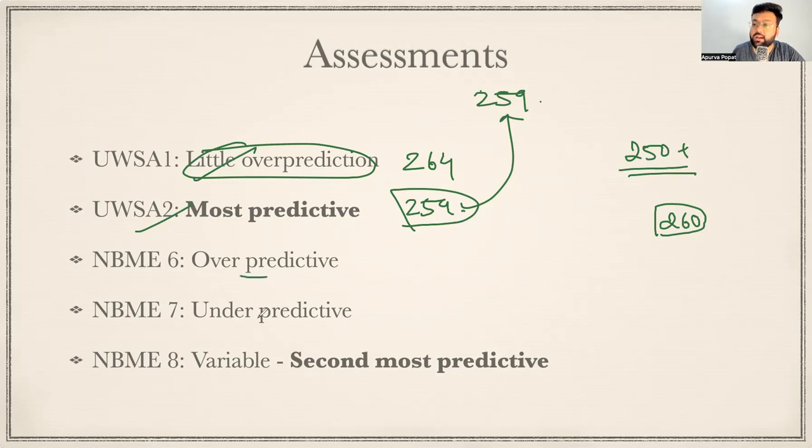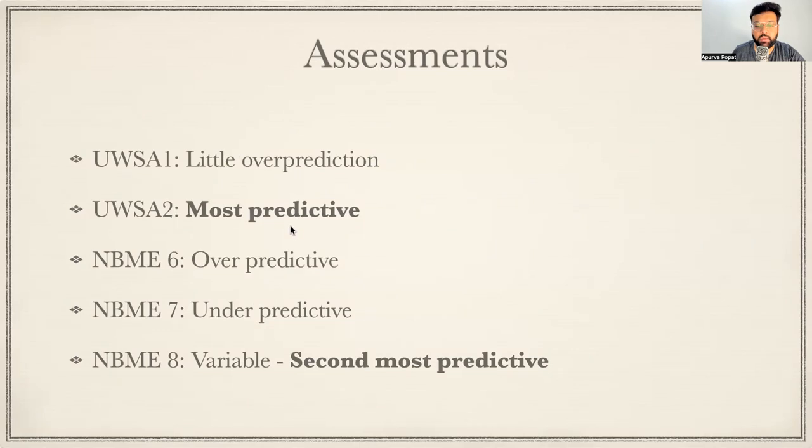NBME 6 is a little over-predictive, 7 is under-predictive, and the next best exam to be near-predictive is NBME 8. So that's after UWSA2. So UWSA2 and NBME 8 are kind of predictive exams. But these days, AMBOSS is also running some Step 2 CK simulation exams - not simulation but maybe four-hour exams, four-block exams - and you may also get three-digit scores for that.